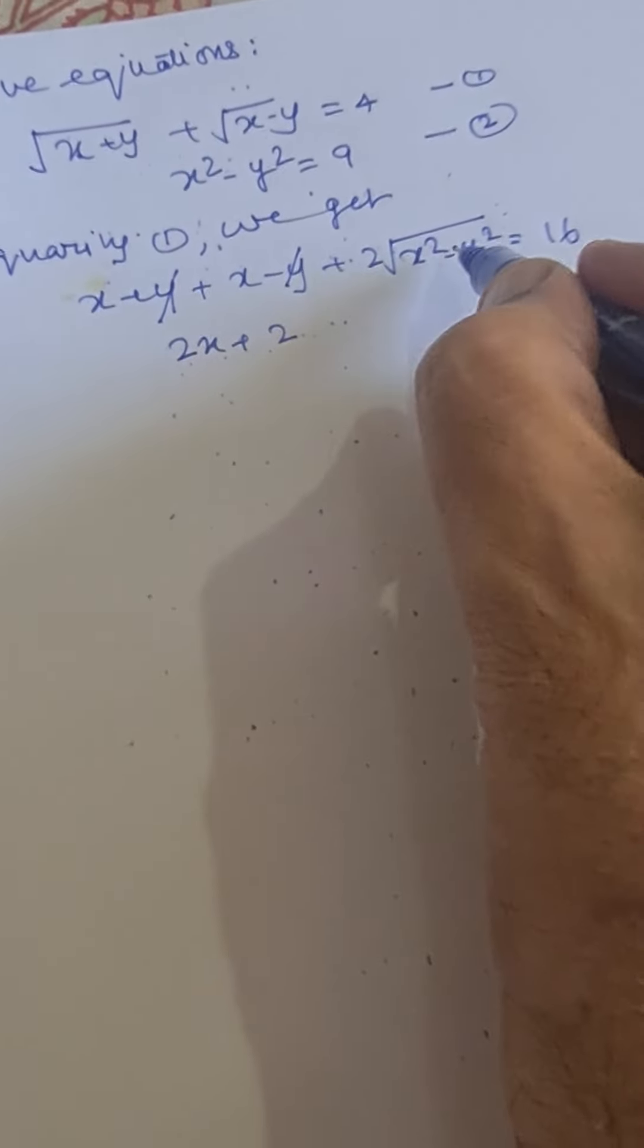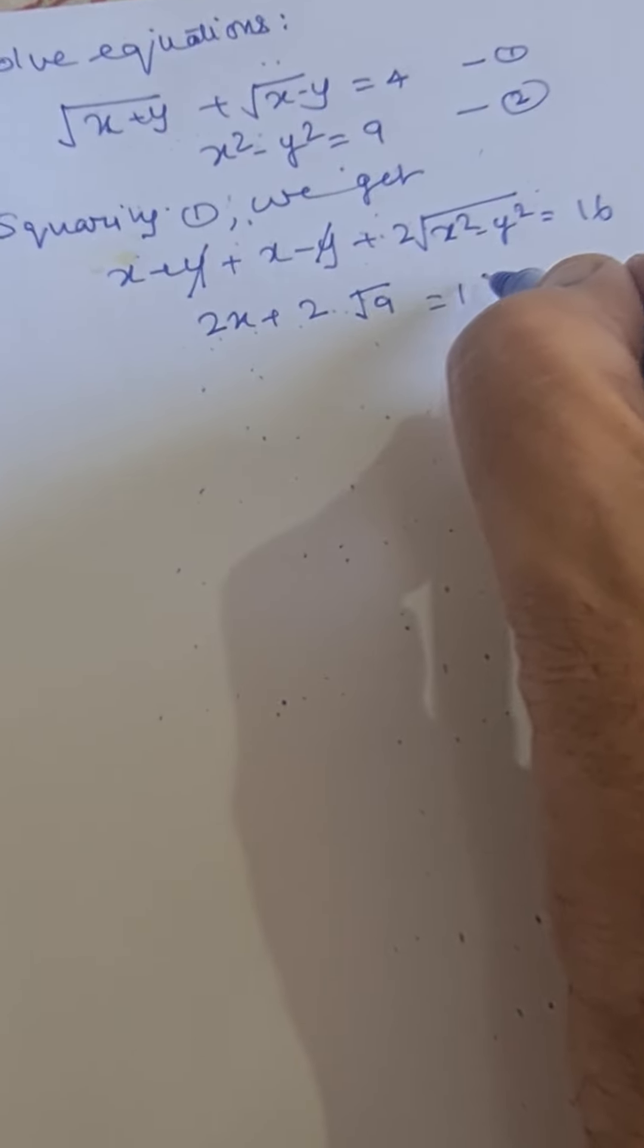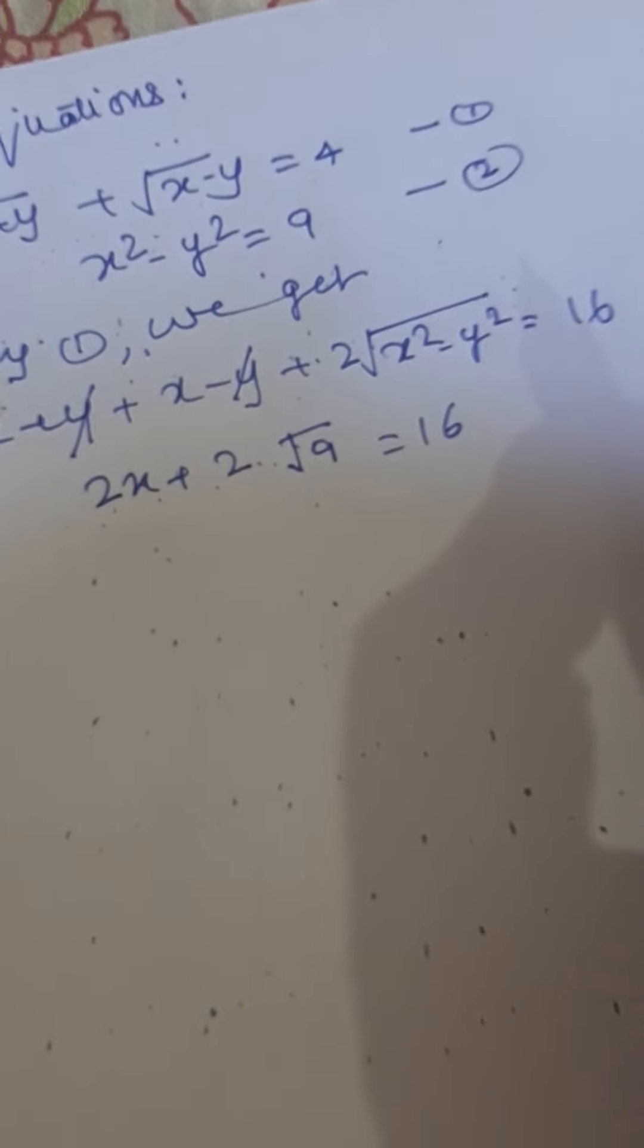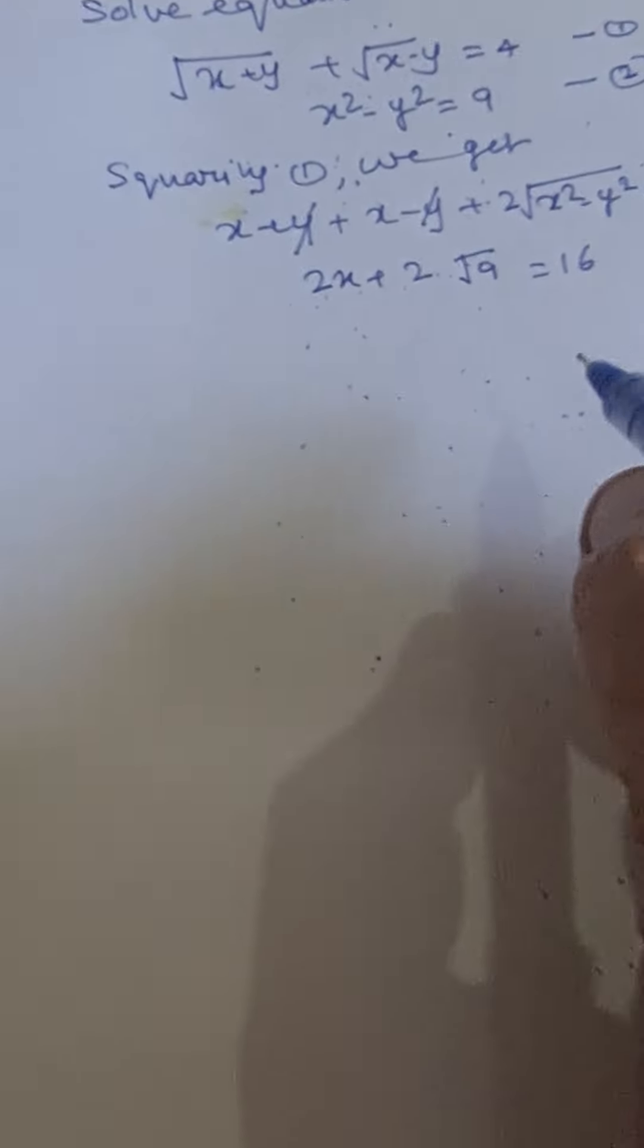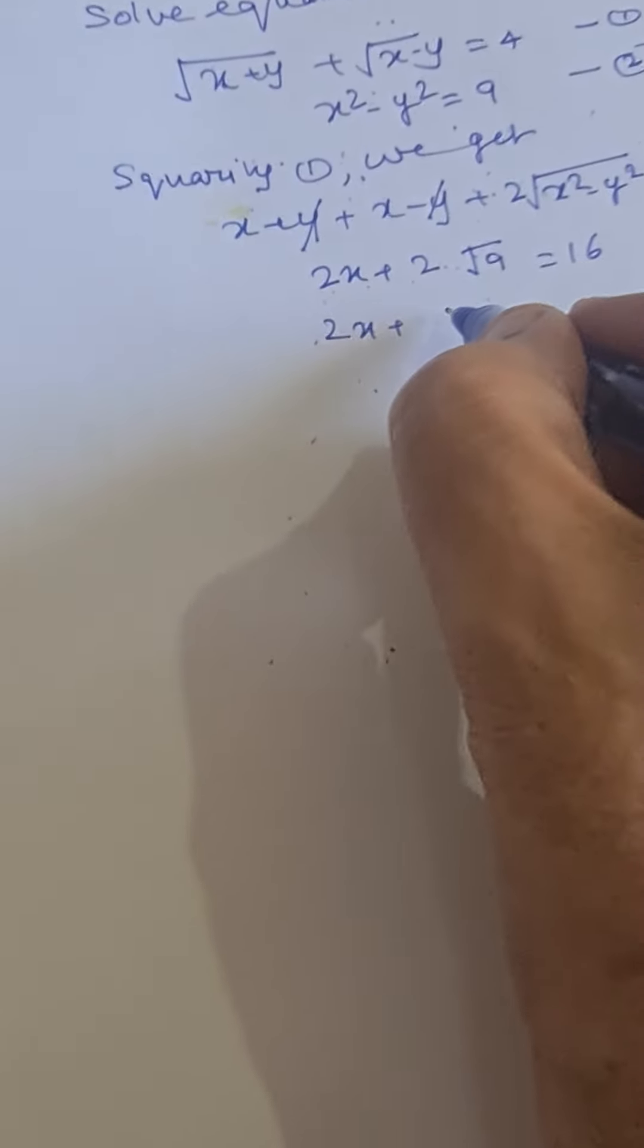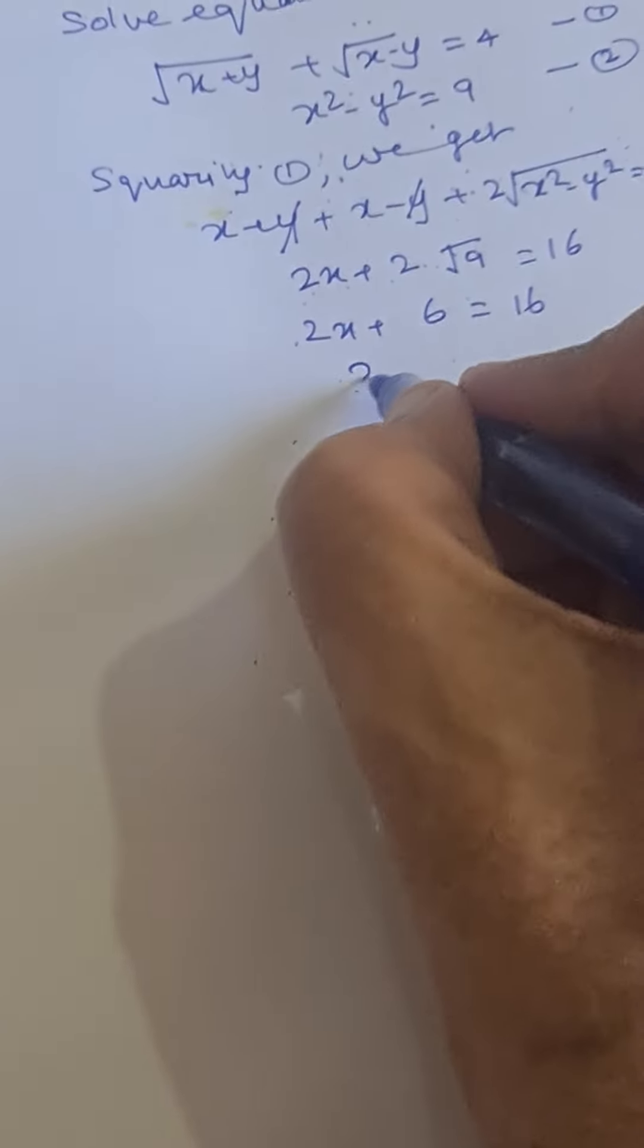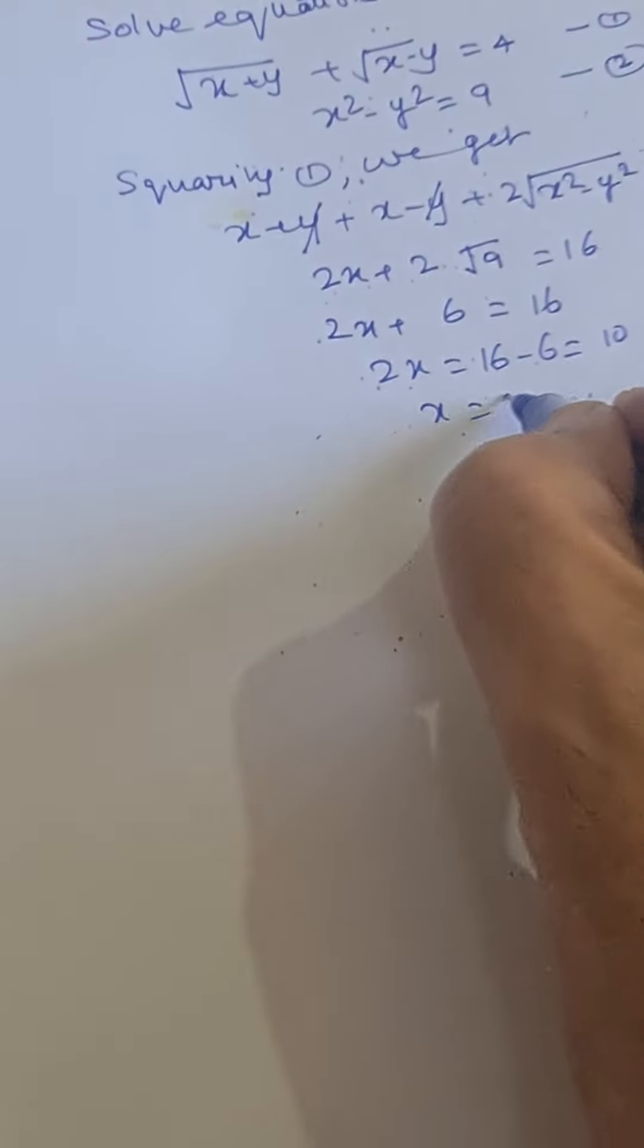Now x square minus y square is equal to 9, so we put this value here. This we can write as 2x plus square root of 9 is 3, 3 into 2 is 6, equal to 16. Or 2x equal to 16 minus 6 equal to 10, so x equal to 5.